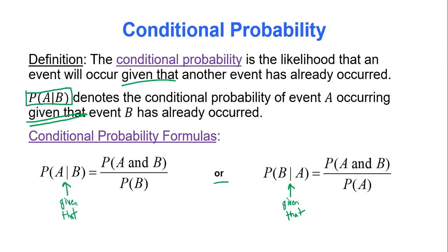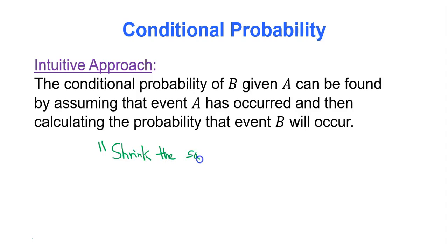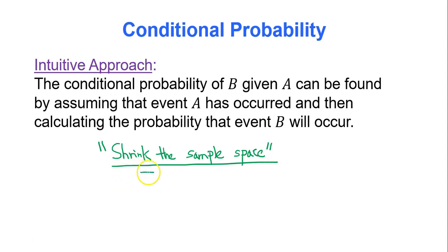Unless you take a fancy theoretical stats class later on, you really won't need those formulas. The intuitive approach is: assume that event A has occurred and then calculate the probability that event B will occur. Basically, you're going to shrink the sample space — that's what conditional probability is doing. You shrink the sample space based on the given-that condition. I can't emphasize that enough.